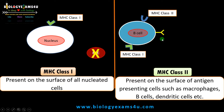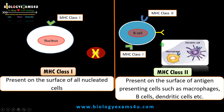Antigen presenting cells also have their own specific receptors, like the B cell receptor. These antigen presenting cells include dendritic cells and macrophages. To repeat: MHC class 1 is present on all nucleated cells, whereas MHC class 2 is present only on antigen presenting cells like macrophages, B cells, and dendritic cells.